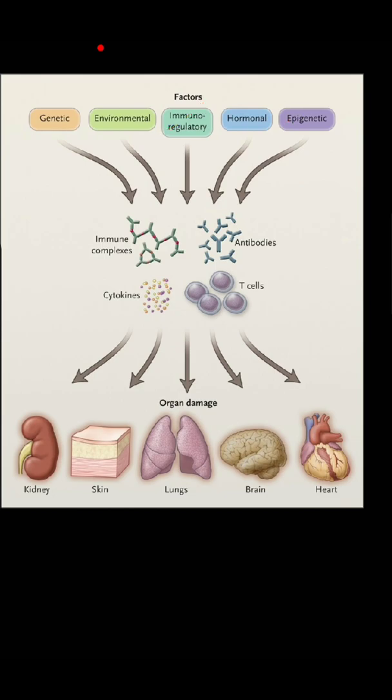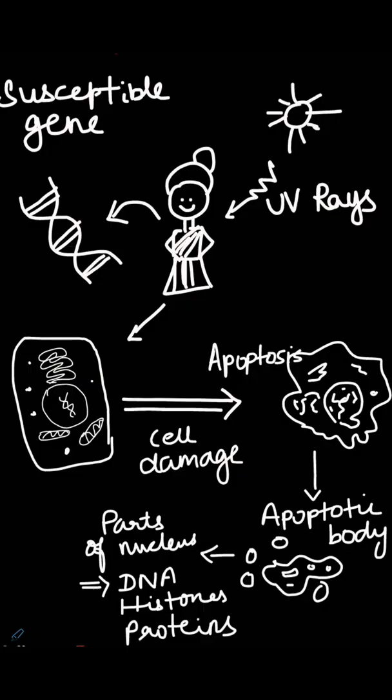So now with all factors — genetics, environment, immune regulation, hormones, and epigenetic factors — all of these combine to form an immune complex and antibody against self-cells. That means our own immune system reacts against our own cells, going on to damage multiple organs like kidney, skin, lungs, brain, and heart. This is the SLE pathogenesis.